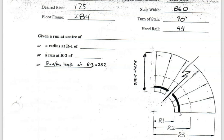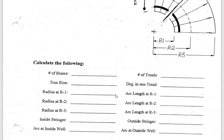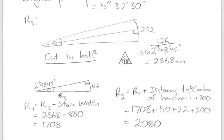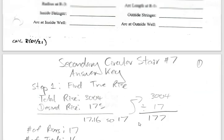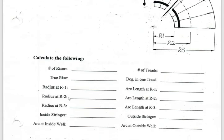So: half the handrail is 22mm, plus the 50mm code clearance = 72mm to the center of the handrail, then add 300mm to reach the line of travel. The math is: R1 + 50 + 22 + 300. That gives us R2 = 2080mm. So now we have all three radii.